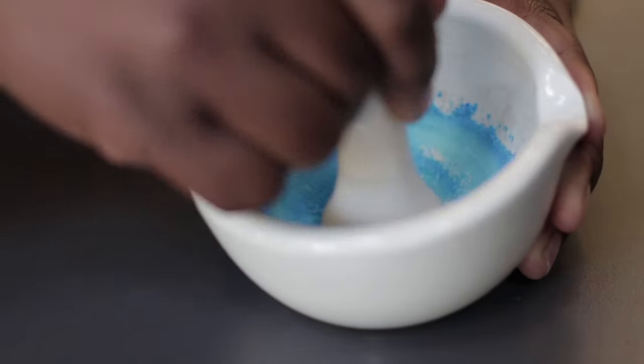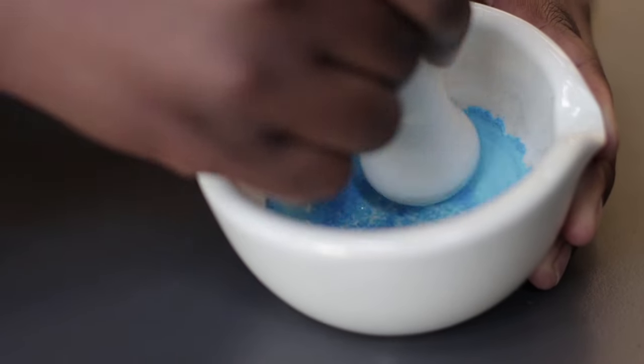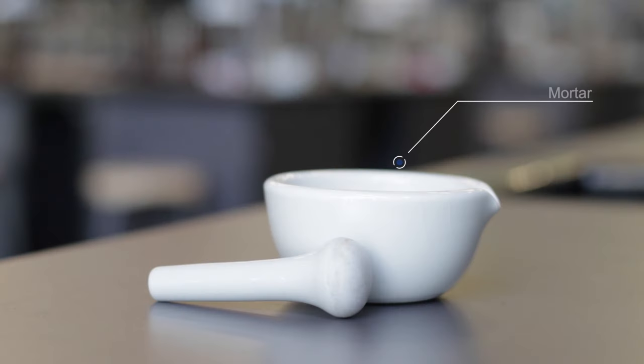A pestle and mortar is used for grinding and crushing samples into a powder. The mortar is the bowl. The pestle is the object that is used for grinding and crushing samples.